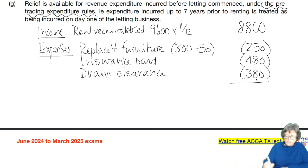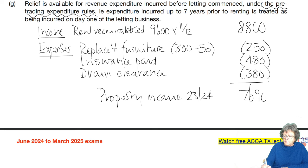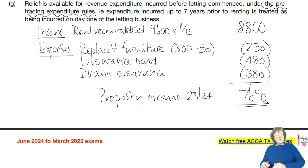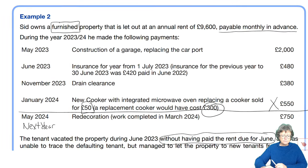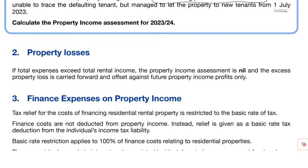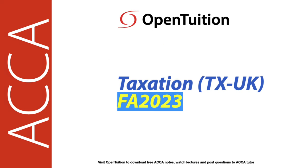That gives us the property income for 2023-24 — a little income and expenditure account showing all the various different details that we have incurred. Excellent. Let's move on to property losses.